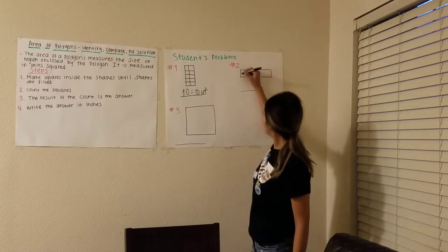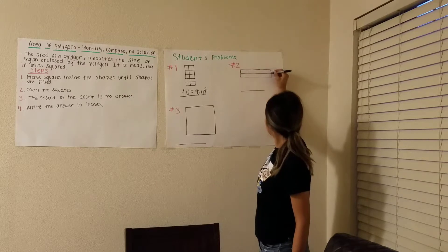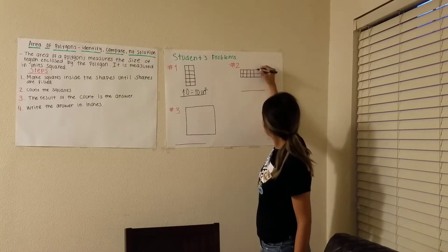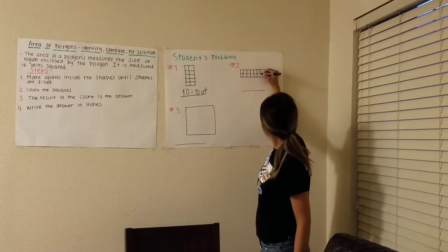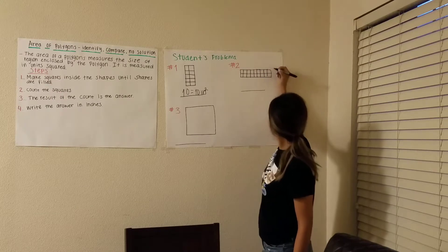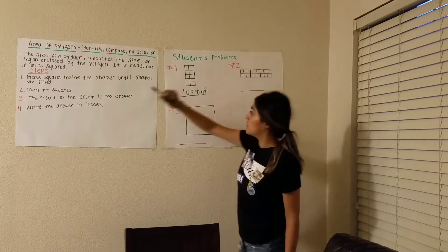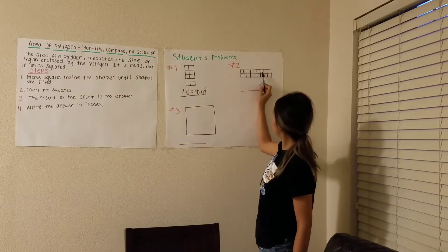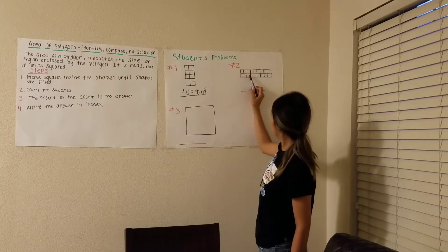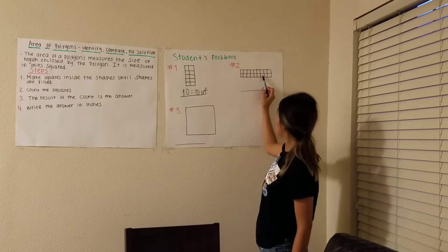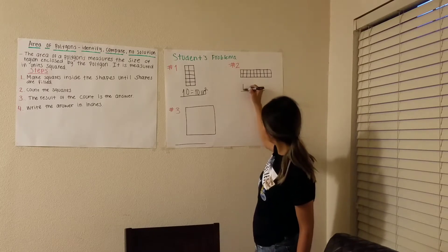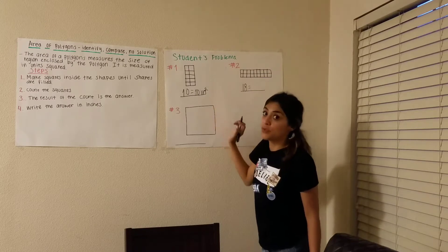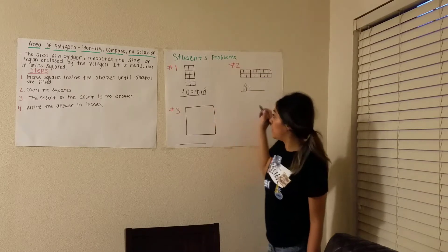Problem two. Step two: count the squares. One, two, three, four, five, six, seven, eight, nine, ten, eleven, twelve, thirteen, fourteen, fifteen, sixteen, seventeen, eighteen. We have to put our answer in inches.